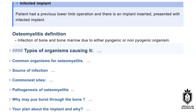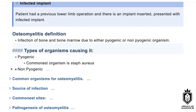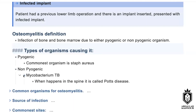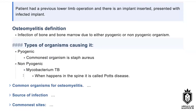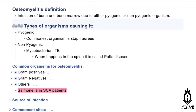Examiner feedback: You need to be very direct and quick. You said lots of things around the main answer — we don't want that. So: pyogenic or non-pyogenic; commonest organism is Staphylococcus. Non-pyogenic could be Mycobacterium tuberculosis. You can also mention Salmonella and others.